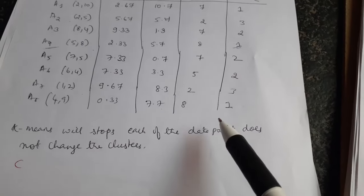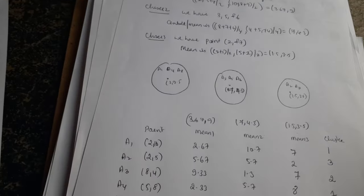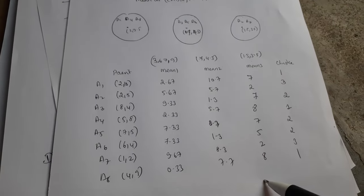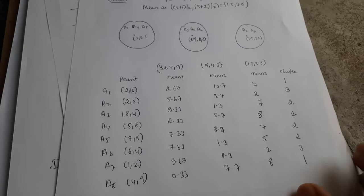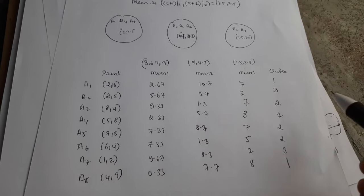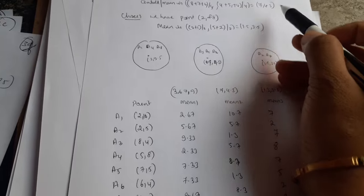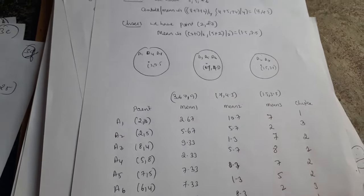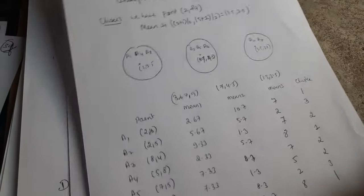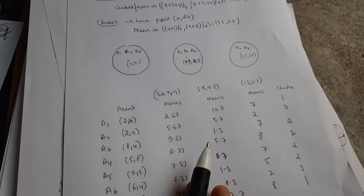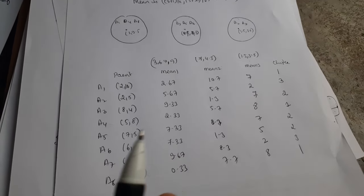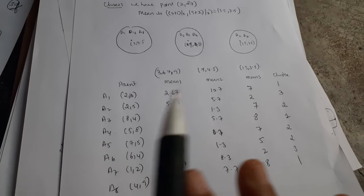Since no data point has changed its cluster, the k-means algorithm stops. The stopping condition is met when each data point no longer changes its cluster — i.e., when we have the same mean values. Recalculating the means confirms we get the same centroid values: (3, 9.5), (6.5, 5.25), and (1.5, 3.5). Since none of the data points will shift to any other cluster, the algorithm terminates.